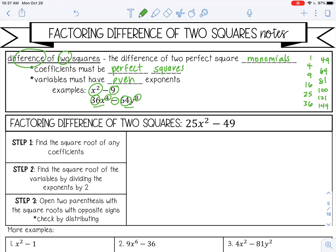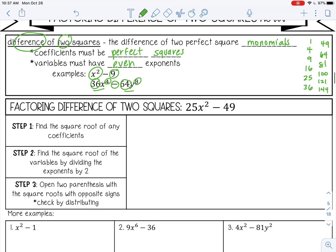So the difference of two squares is a special case when factoring. Let's go over how this works. The first thing you want to do when you see difference of two squares is identify that it's difference of two squares. So here we have two terms, we have perfect square coefficients and constants, it's difference, and we have even exponents. So this checks out, this is difference of two squares.